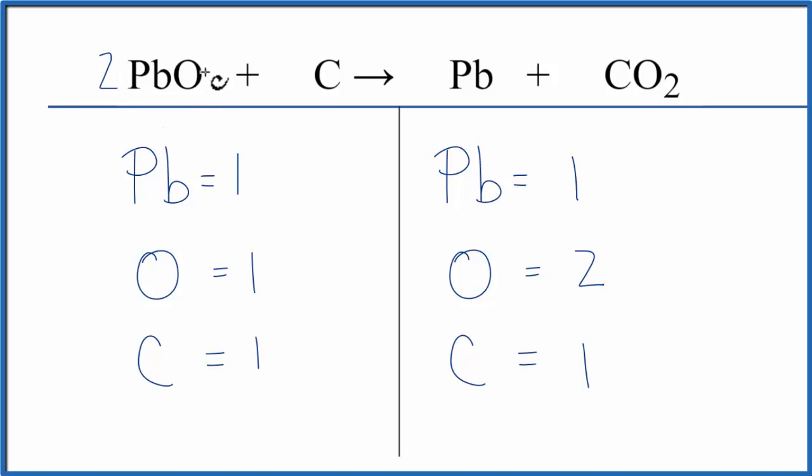If we put a 2 in front of PbO, 1 oxygen times 2, that balances the oxygens, but the 2 applies to everything, so the 1Pb times the 2. Now we have 2 Pb's.